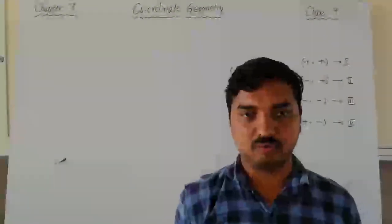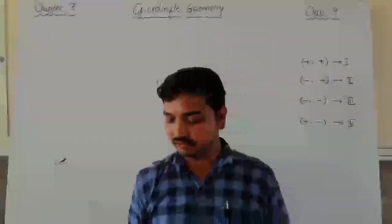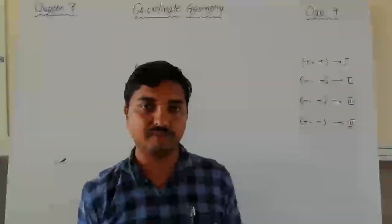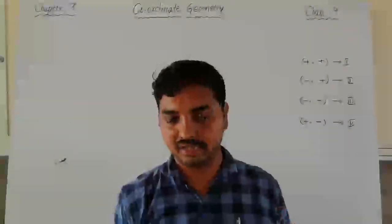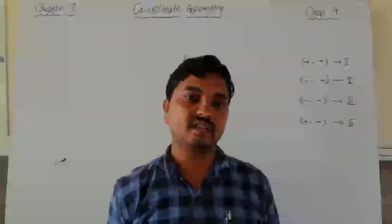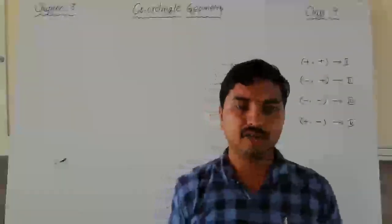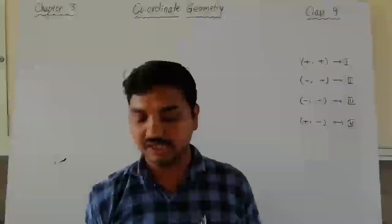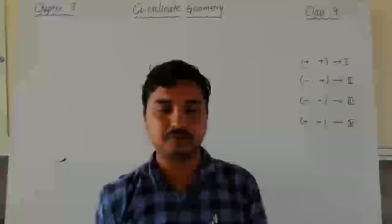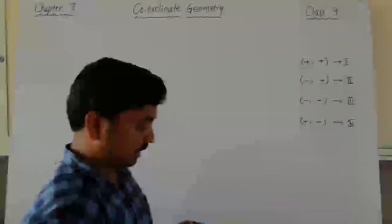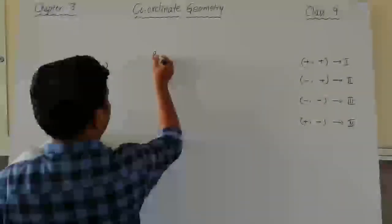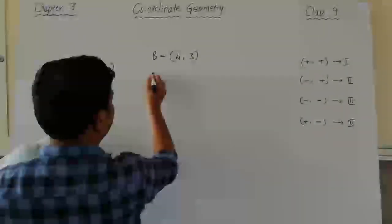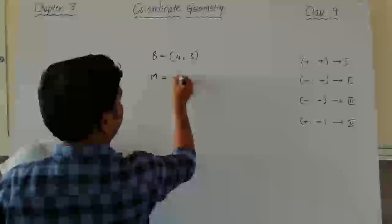Moving to point M in the second quadrant — when we draw the dotted lines, it meets the x-axis at minus 3. Sign is very important — you must consider the sign. So x-coordinate is minus 3. It touches the y-axis at plus 4. No need to write the plus sign; just write 4 — that is the ordinate of point M. So the coordinates become minus 3 comma 4. Always write x-coordinate first, then y-coordinate. For point B the coordinates are 4 comma 3.